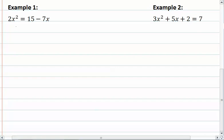In example one here, notice that we have 2x squared by itself and our 15 minus 7x on the other side. So what we want to do is we want to move these over.